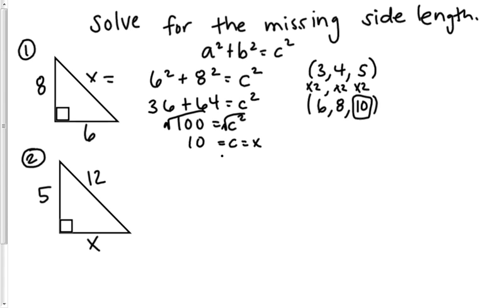So, let's look at number 2. This one is a little bit different. A lot of people want to solve this the same way that they solved number 1, but you don't because you are not solving for the hypotenuse. Now, you are solving for a missing leg.